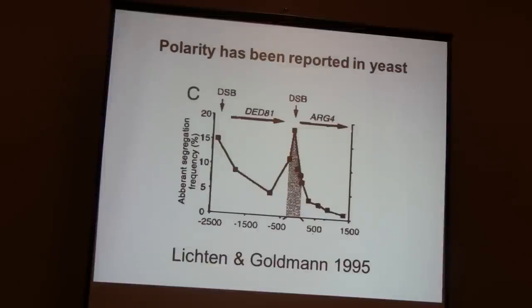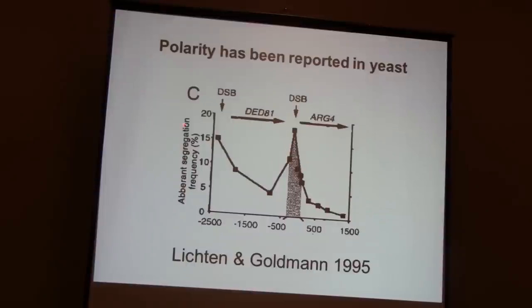Polarity of this kind has been reported before in yeast. Scouring the literature, I found a 17-year-old paper with two genes in yeast showing a similar pattern — a double-stranded break in front of the gene with signal tapering off into the gene body.